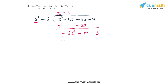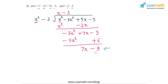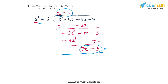The next multiplier is -3, which gives us -3x² + 6. We subtract again and get 7x - 9. The degree of 7x - 9 is less than the degree of x² - 2, so the division process terminates. The quotient polynomial is x - 3 and the remainder polynomial is 7x - 9.